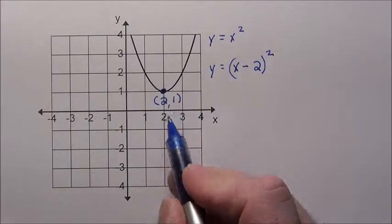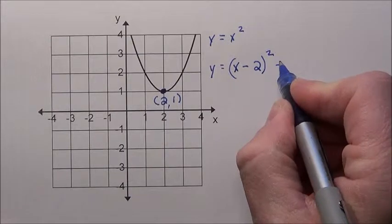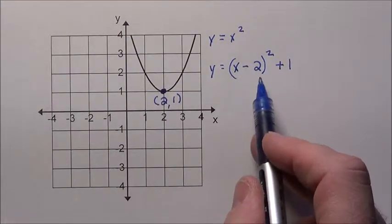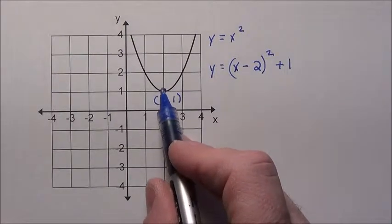Then we shifted it up 1. We just simply took the graph and moved it up 1. So we added 1 to every single value. Every time we plugged in an x and subtracted 2 and squared it, we then added 1 which shifted it up.